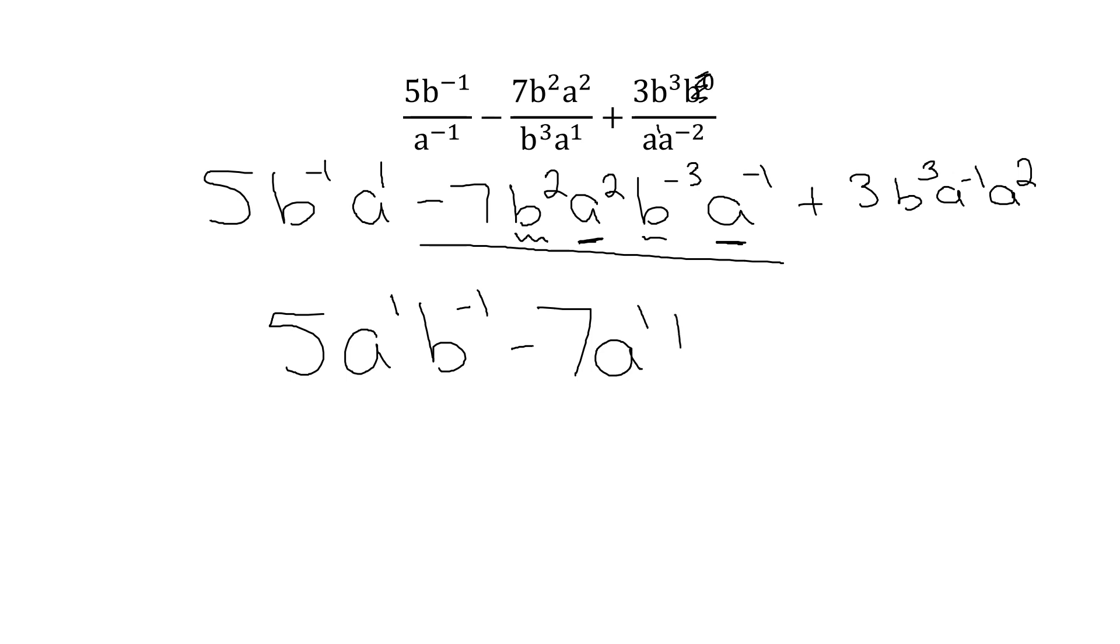I can simplify within here. My a's can simplify. My coefficient stays. a^-1, a^2, becomes a^1. And then I have b^3. And that just stays. Now I have to see if I have any like terms. a^1, b^-1. a^1, b^-1. This has an a^1, but it has a b^3. So therefore, it doesn't match.